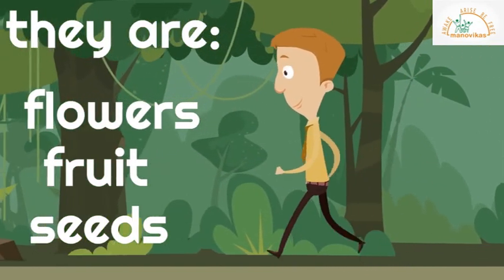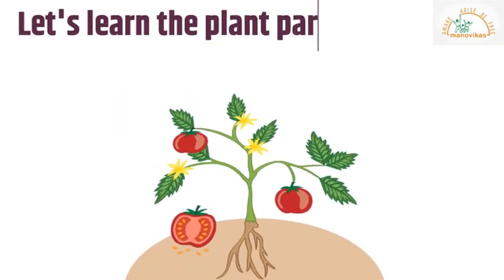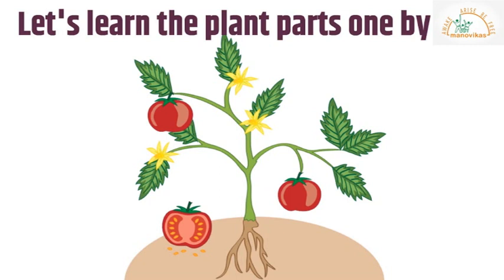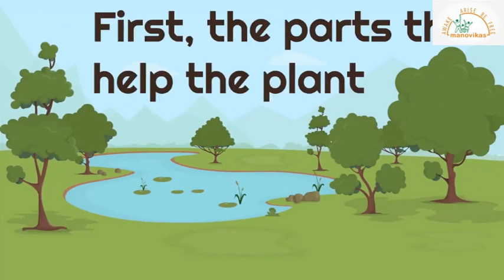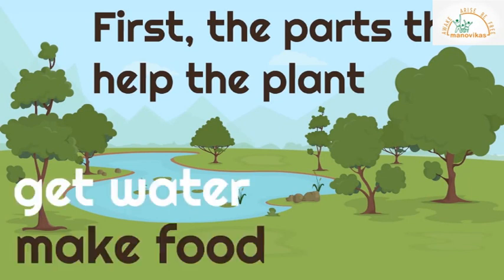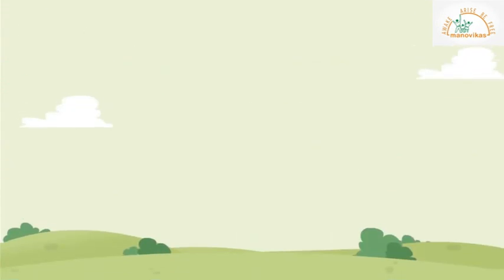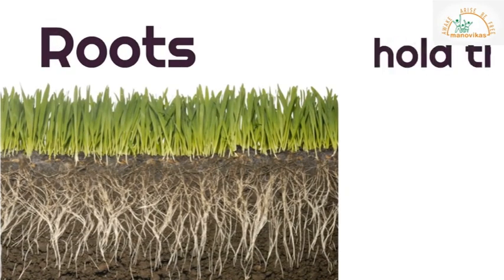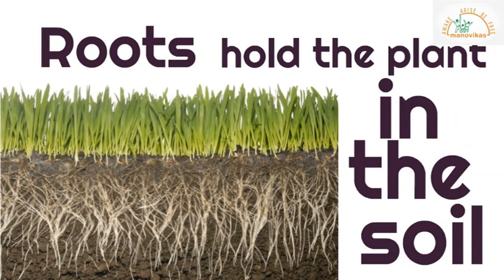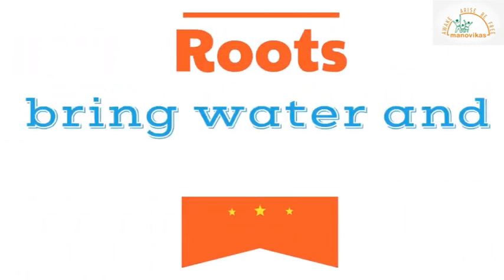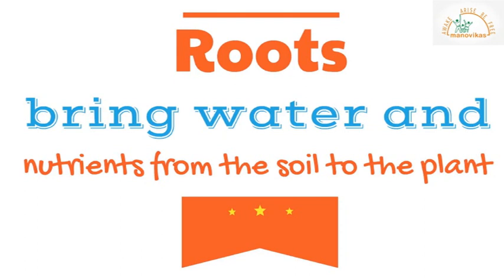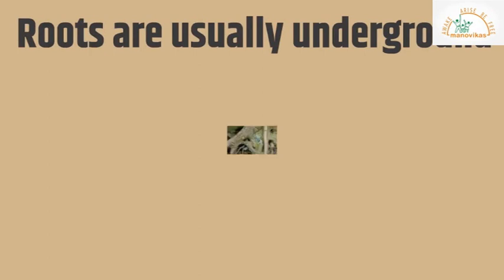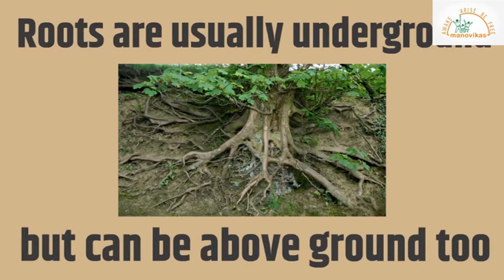Let's learn the plant parts one by one, starting with the parts that help the plant get water, make food, and grow. The first part is the roots. Roots have a special job — roots hold the plant in the soil. The soil is the dirt in the ground. Then roots bring water and nutrients from the soil to the plant.